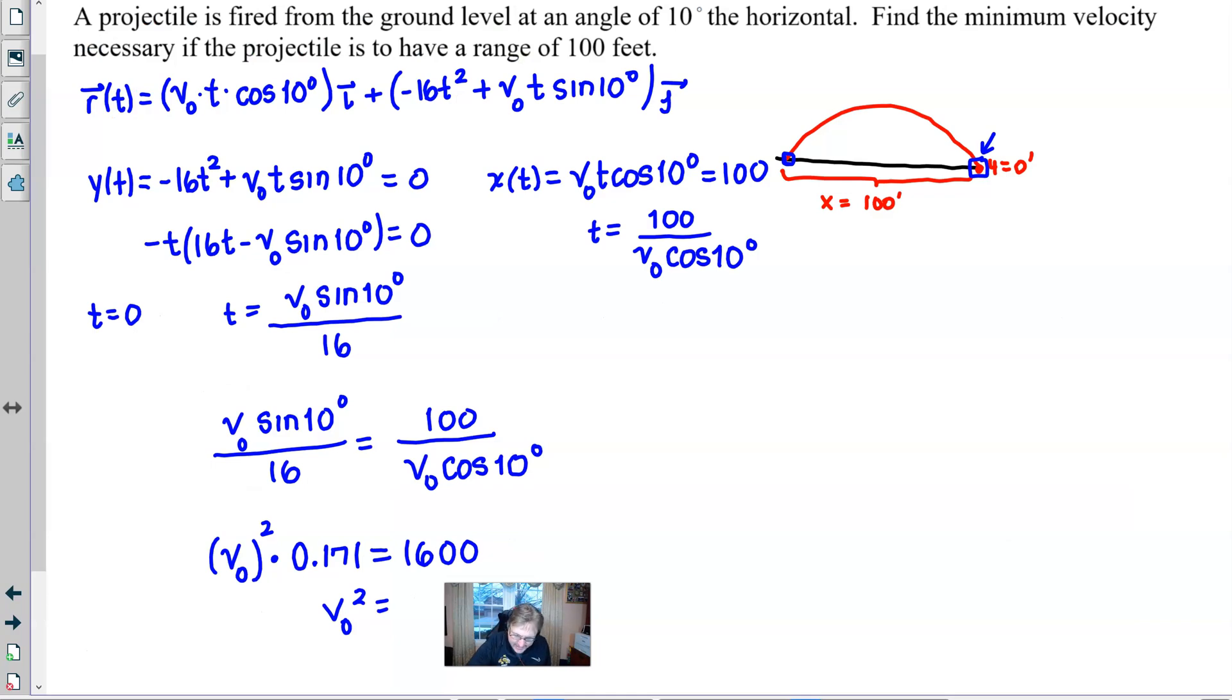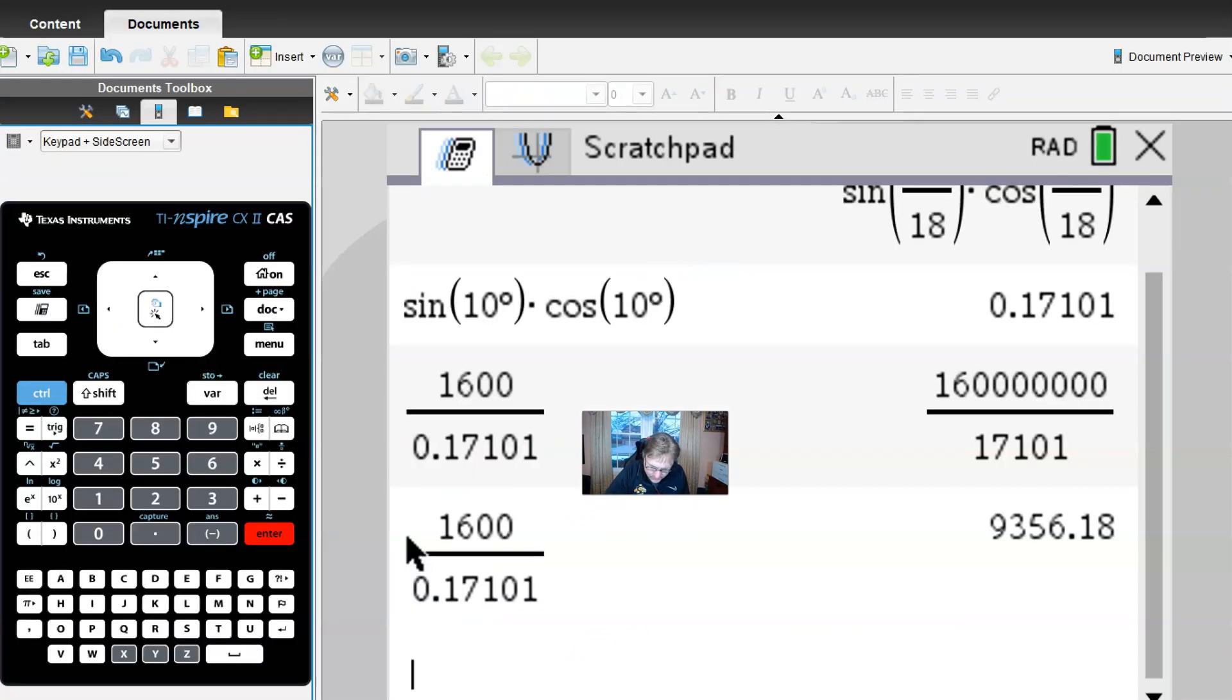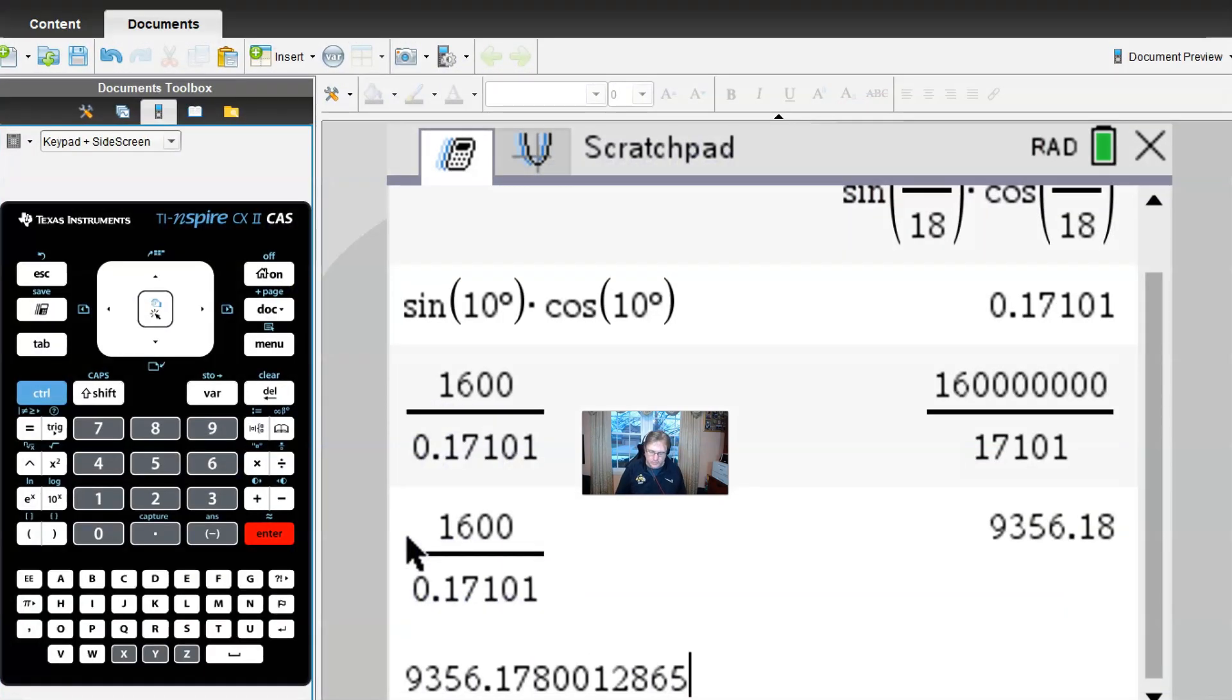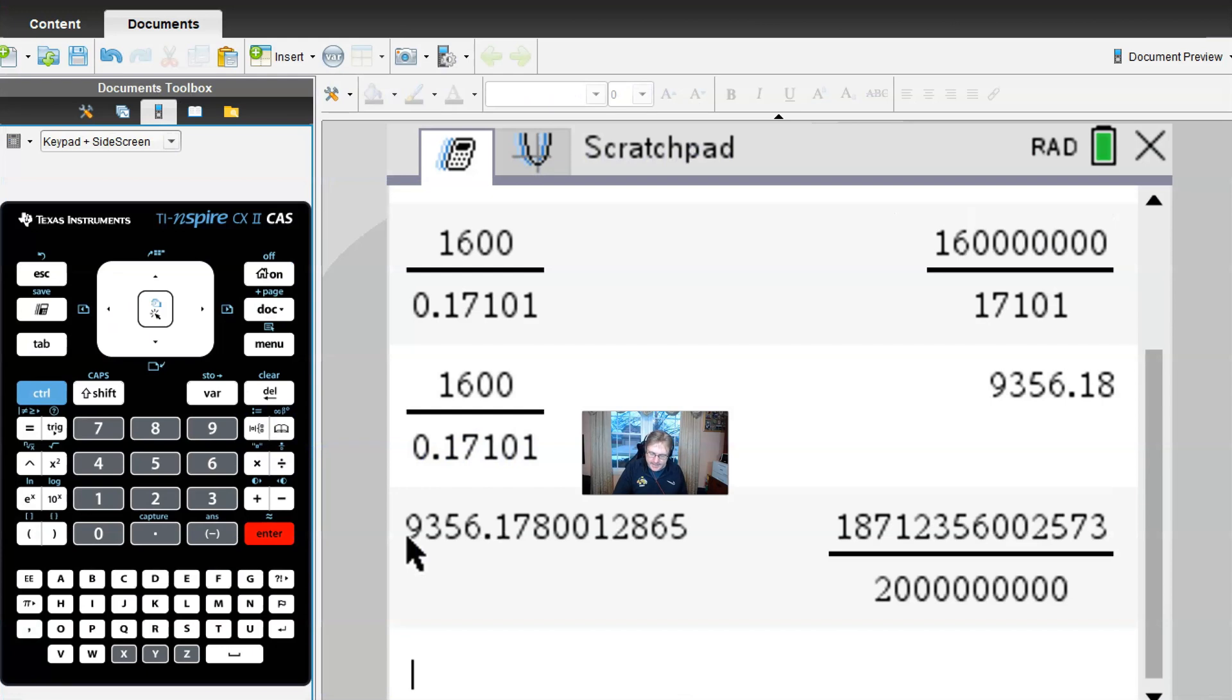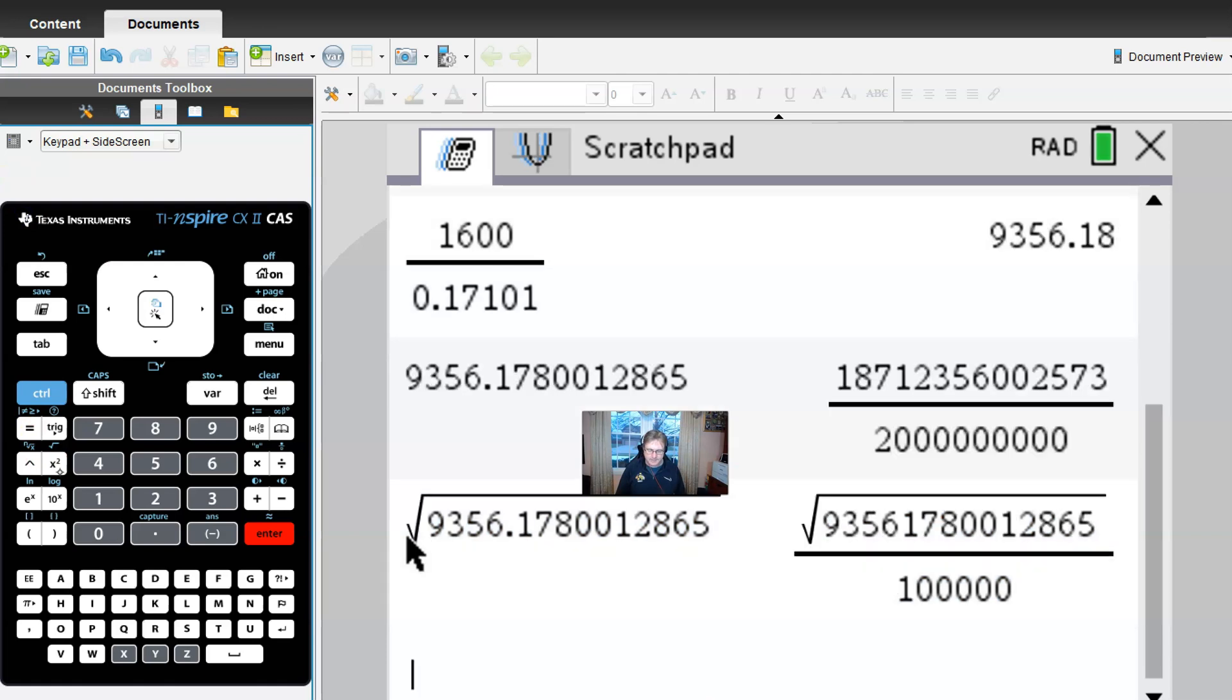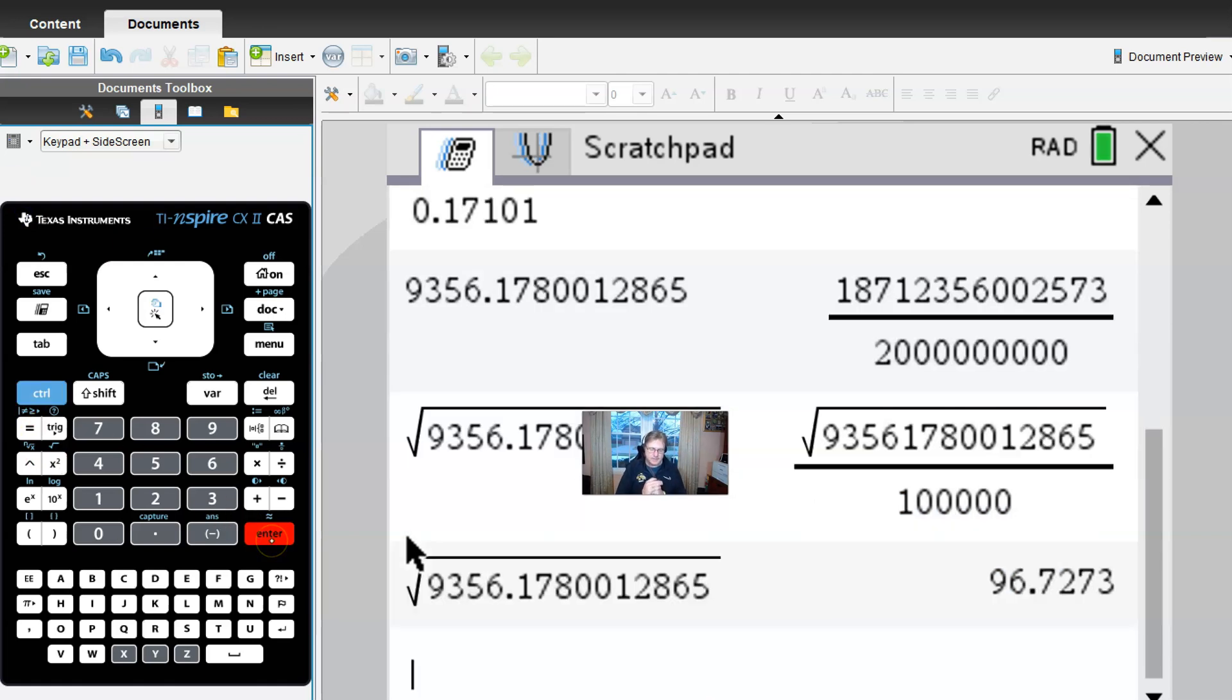All right so we're going to take that number, 9356. And one more time I might go ahead and get as many decimals as I can, 0.1780 let's call it. But as soon as I take the square root of both sides that's going to isolate my v₀. And I'll use the calculator one last time for that. I'll just take the square root and I'll grab that decimal right there and my answer is going to be 96.727.